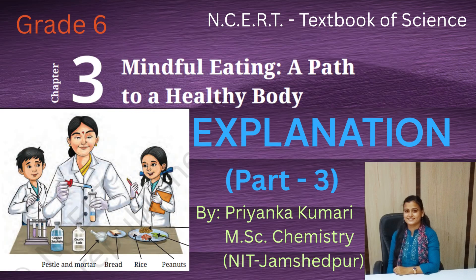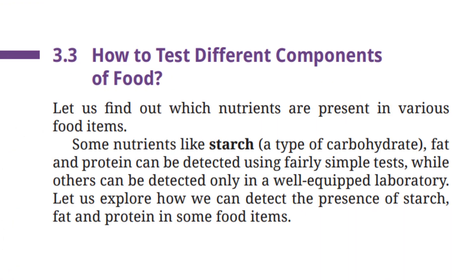So, are you ready to explore more? Let's begin! How to test different components of food? Let us find out which nutrients are present in various food items. Some nutrients like starch, which is a type of carbohydrate, fat and protein can be detected using fairly simple tests, while others can be detected only in a well-equipped laboratory. Let us explore how we can detect the presence of starch, fat and protein in some food items.